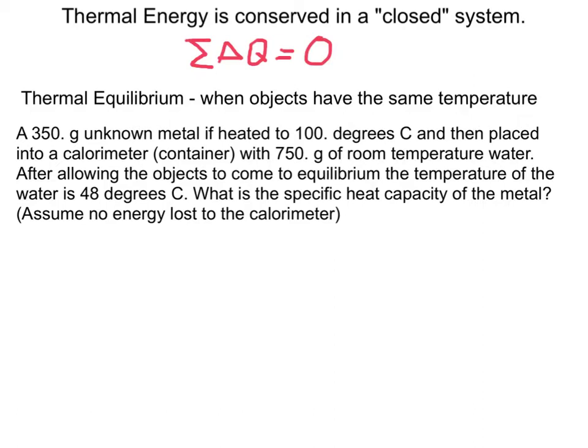So what I can tell you is delta Q of my metal plus delta Q of the water has to equal zero. Sum of all the exchanges in thermal energy, gaining and losing thermal energy, has to equal zero. By the way, if we had to deal with the calorimeter, because the calorimeter or the cup or the container is technically going to absorb a little bit of heat, we would put that as a third delta Q.